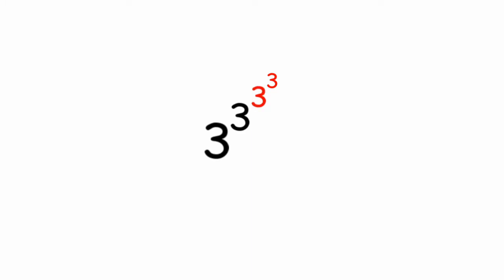3 to the power of 3, that's equal to 27. 3 to the power of 27, that's 7.6 trillion. Now, 3 to the power of 7.6 trillion.